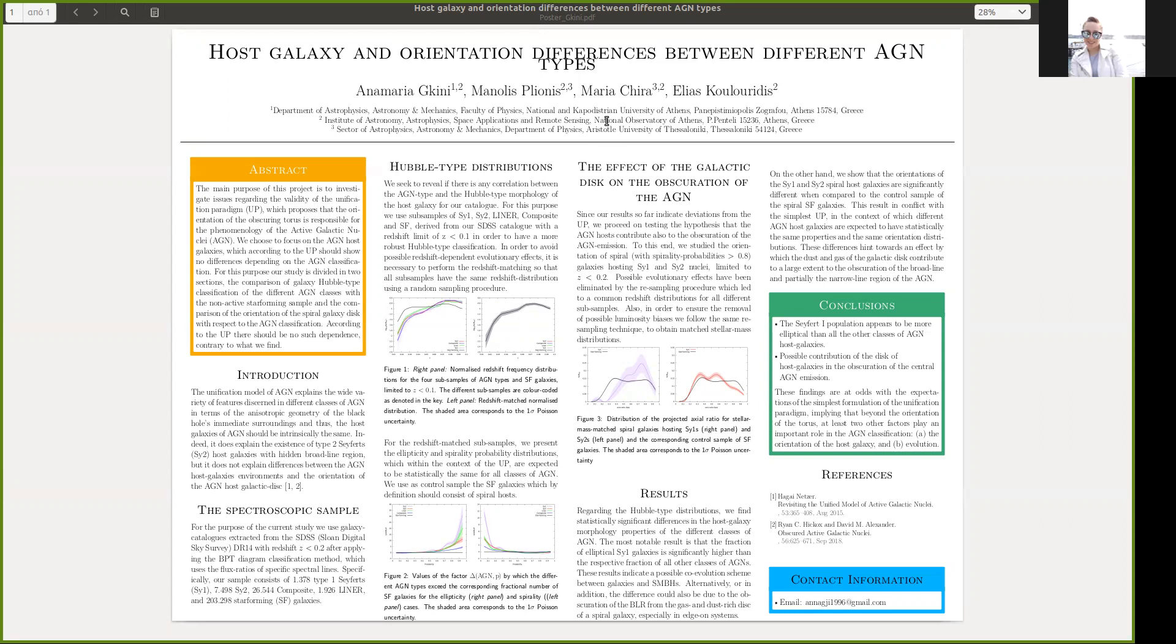Also, these differences could be due to the contribution of the galactic disk in the obscuration of the AGN activity. More specifically, the gas-rich disk of a spiral galaxy could absorb the broad line region, giving rise to Seyfert-2 objects.